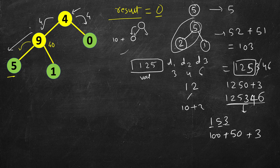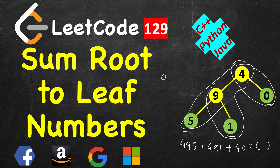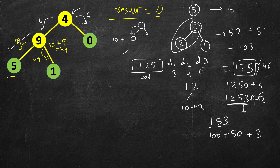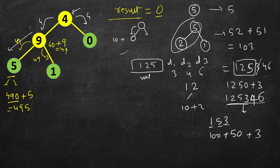Every node's task is: take the value given to it, multiply by 10, and append the current digit. All node values are single digits (0–9), which is crucial. We pass 49 to nodes 5 and 1. Node 5 sees its left and right are null — it's a leaf node. It multiplies 49 by 10 and adds 5, giving 495. Since it's a leaf, it updates the result. Result now becomes 495.